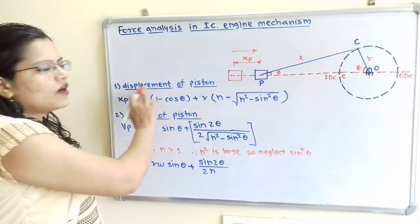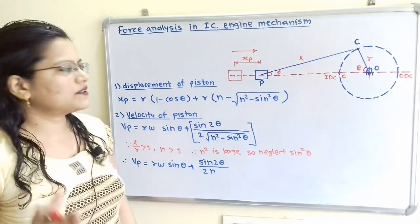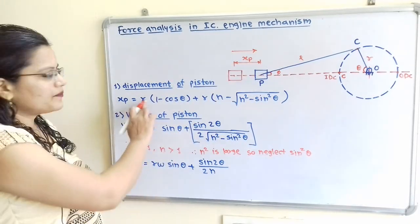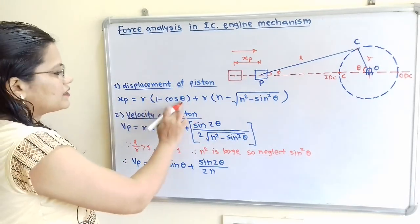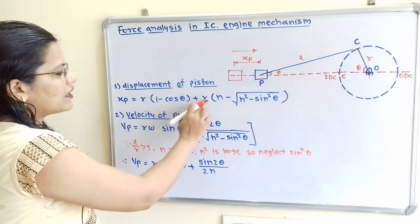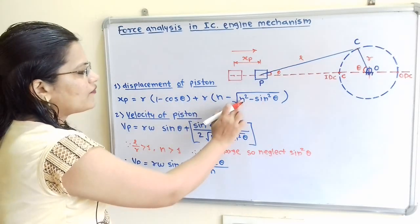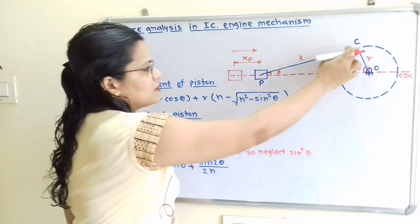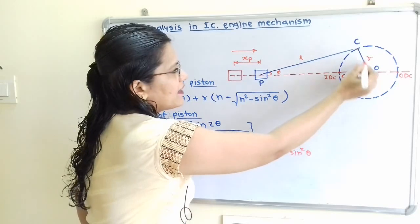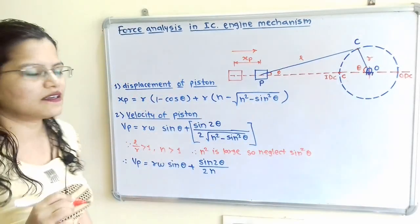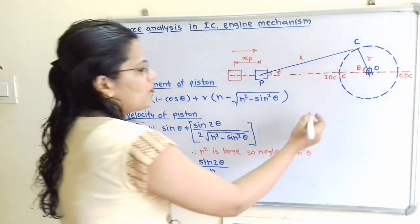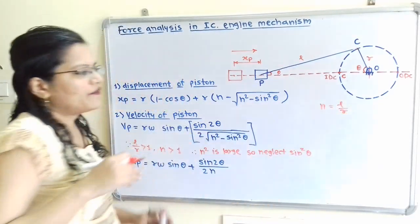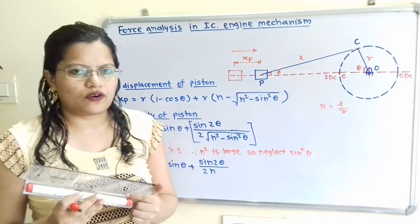To calculate displacement of piston, the notation is XP. XP is equal to R(1 - cos theta) + R(N - √(N² - sin²theta)), where R is the radius of the crank, theta is the angle made by the crank with the inner dead center line, and N is the obliquity ratio where N = L/R, and L is the length of the connecting rod.